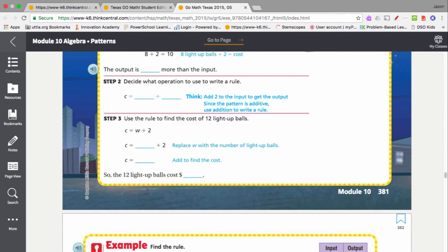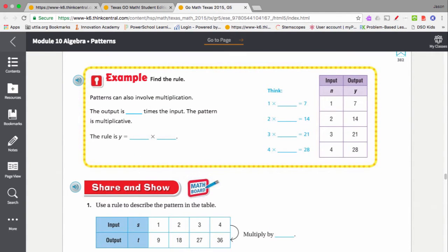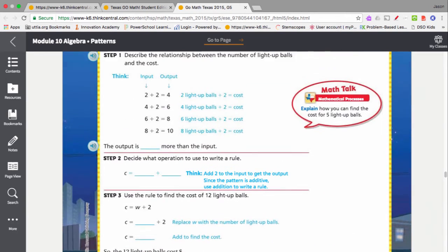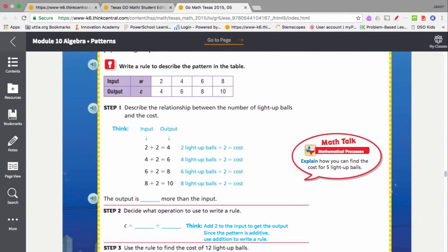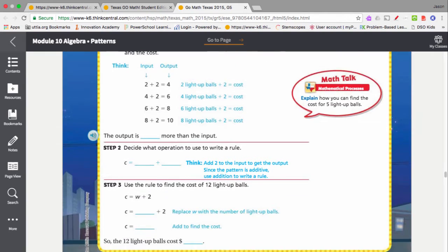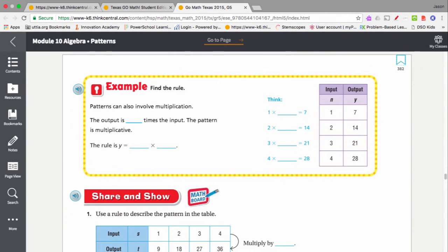Now, sometimes we won't see the pattern that way. Sometimes we'll see the pattern this way where it's up and down like this. Let me go back up here to show you the difference. When this table goes sideways, the input's on top, the output's on the bottom. If the table is vertical like this, you're going to see the input on the left and the output on the right. And you're going to see in a moment why that's important.